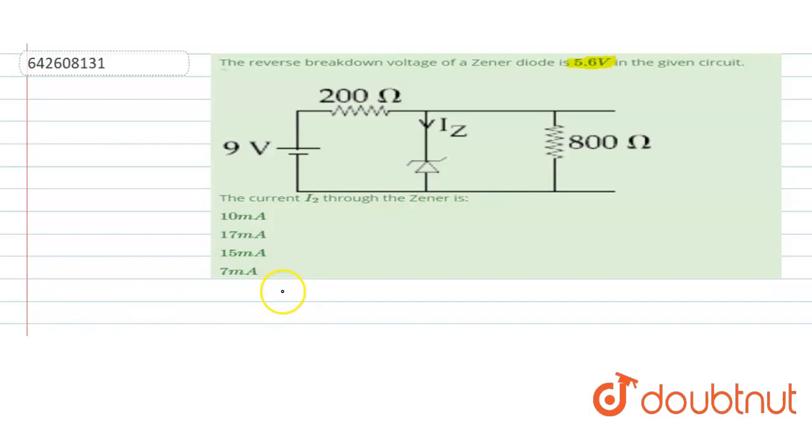We can see in this problem that the given Zener diode is working in its reverse breakdown potential, and it is connected with a battery of 9 V. So the potential difference across the Zener diode should be 5.6 V.